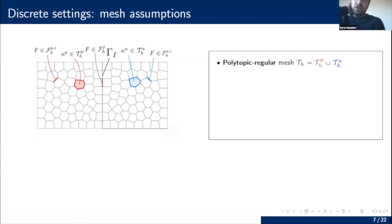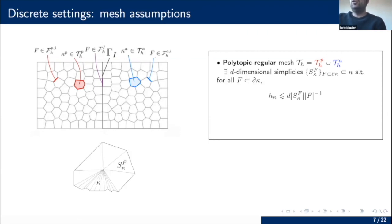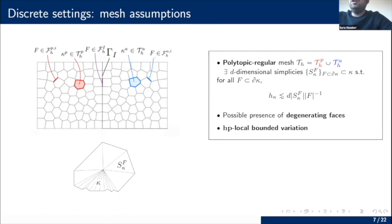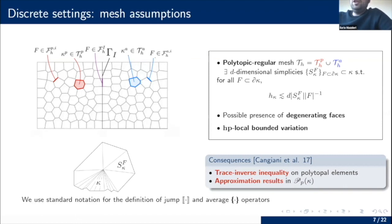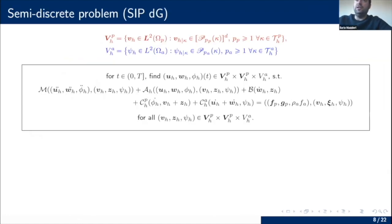For the discretization, we consider a polytopic regular mesh T_h made of two different polytopic regular meshes: T_{h,P} for the poroelastic domain and T_{h,A} for the acoustic domain. This mesh satisfies a uniformity condition that allows for degenerating faces. We also assume HP local bounded variation for our analysis to avoid technicalities. In summary, we can apply trace and inverse inequalities on polytopic elements, and we have standard approximation results in the space of polynomials of order p. For the DG formulation, we use standard notation for jump and average operators.